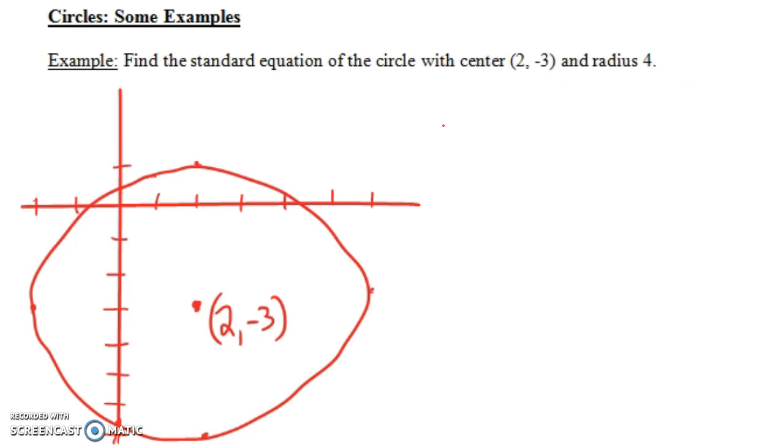So let's remember the standard equation for an equation of a circle is (x - h)² + (y - k)² = r². Now let's remind ourselves here, what is our r? Well our r is 4 and the (2, -3), that's the (h, k). That's the center. The center is (h, k) and the radius is r.